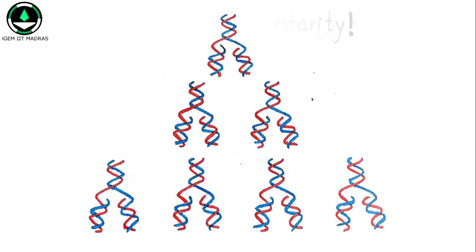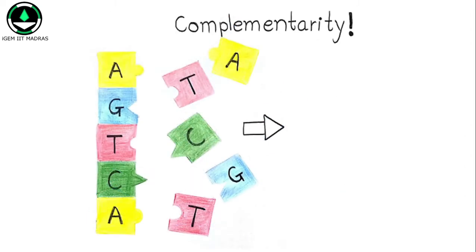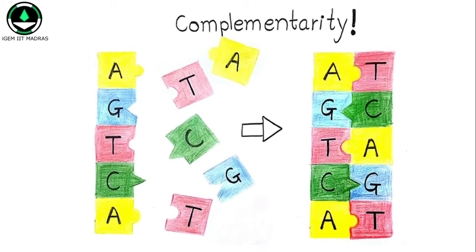DNA base pairing: T pairs with A, and G pairs with C. This is called complementarity.